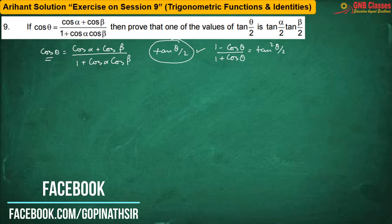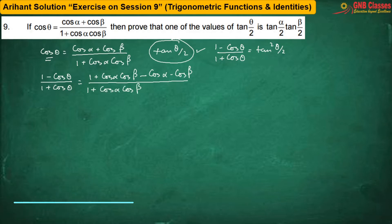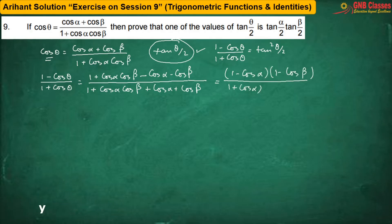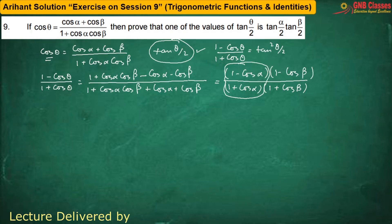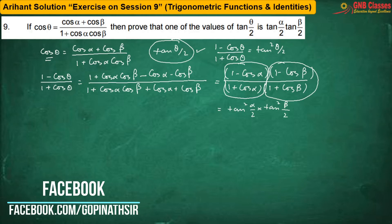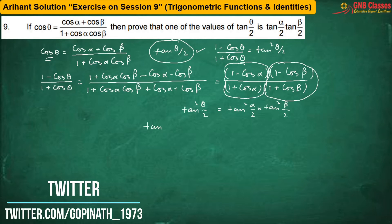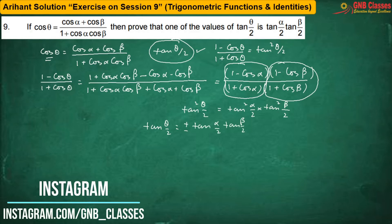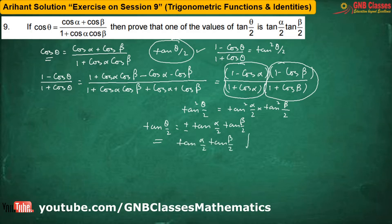So let me apply componendo and dividendo, we are going to get. After factorizing: 1 − cosα by 1 + cosα yields tan²(α/2), and 1 − cosβ by 1 + cosβ yields tan²(β/2). On the left hand side we get tan²(θ/2). Therefore, tan(θ/2) = ±tan(α/2)·tan(β/2).